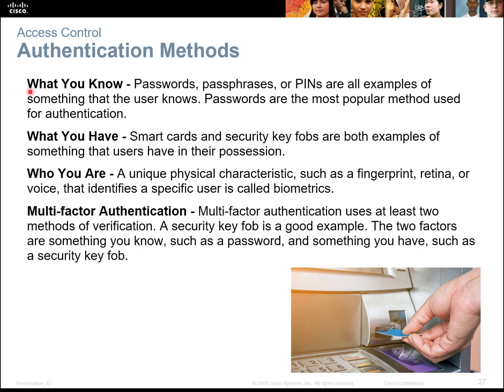There are three authentication factors: what you know — passwords, passphrases, PINs; what you have — smart cards, fobs, or anything of that nature; and who you are — your physical characteristics like fingerprints or retina scan. Multi-factor authentication uses at least two of these, so just because someone has your password, they might not have your smart card, or they might have your PIN but not your fingerprints. Theoretically, the person has to be physically present to authenticate and get into a system such as an ATM, bank, government, or educational system.